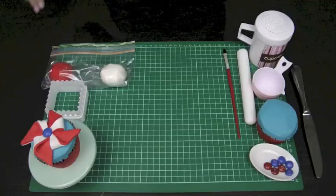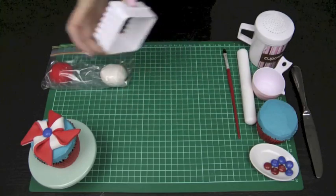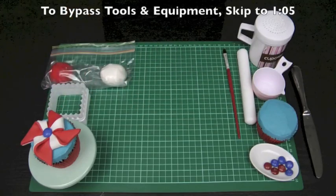Tools and equipment that we will be using today. I have a square cookie cutter. So mine is just a cheap plastic square cookie cutter. And that one there is 2.5 inches or 6.5 centimeters.